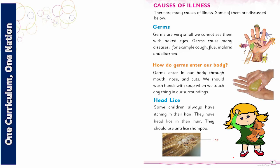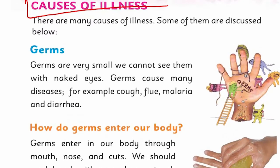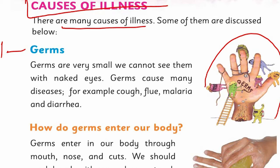Now, my dear students, let's move to the next topic: causes of illness. We have seen the signs, and now in this session we will also see the causes. There are many causes of illness; some of them are discussed below. Number one is germs. Germs first attach to our hands, and when we eat with dirty hands, these germs go into our stomach and throat, causing cough and diarrhea.